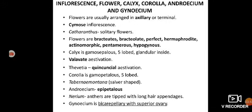Regarding inflorescence: flowers are usually arranged in axillary or terminal cymose inflorescences. Flowers can be solitary, terminal, or axillary; in Catharanthus flowers are solitary. Flowers are bracteate, bracteolate, perfect, hermaphrodite (both sex organs in one flower), actinomorphic (symmetrical on both planes), and pentamerous. The flower is hypogynous, meaning the ovary is superior.